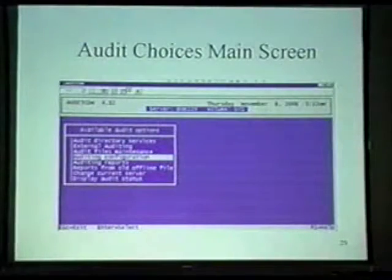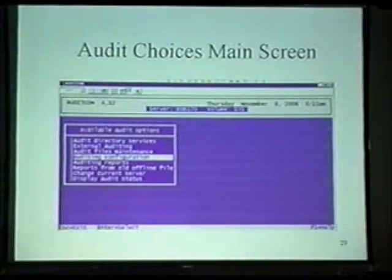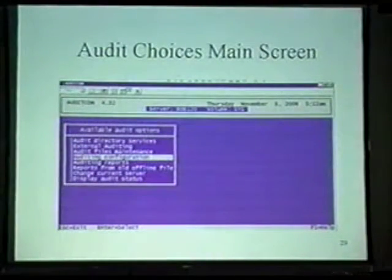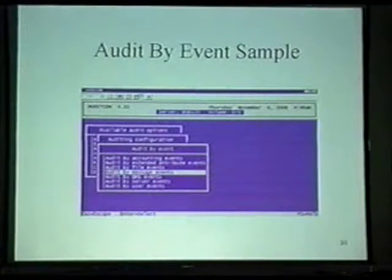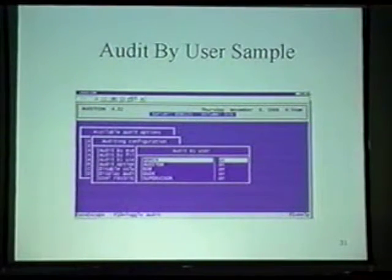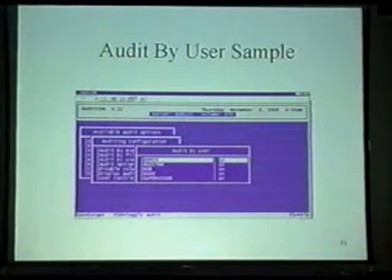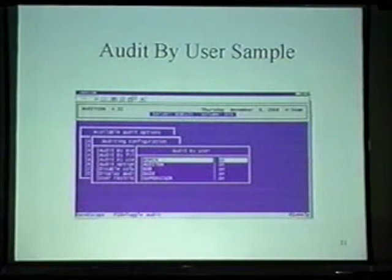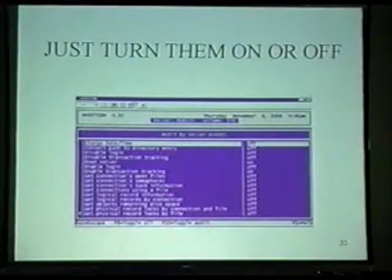Again, this is looking at the AuditCon utility and the available audit options. You can look at audit directory services - this is a great change control tool for auditing directory services. This is auditing by events - once you drill down to the actual thing you want to audit, it's an on/off toggle. This is auditing an individual user. If you want to audit the administrator, you would just pick his ID from this screen.